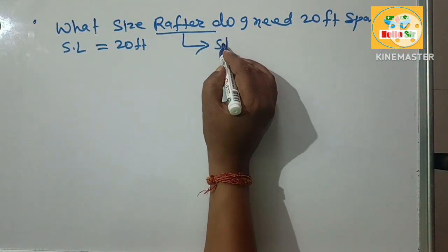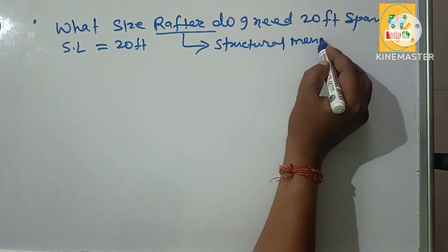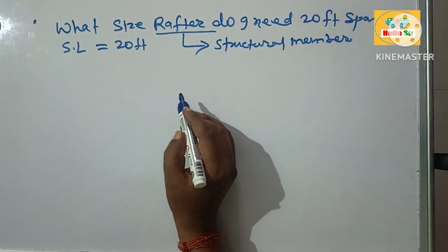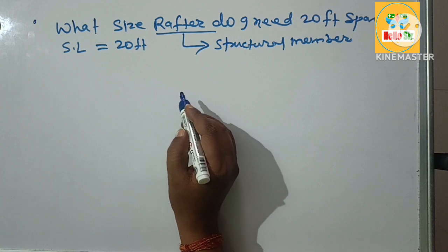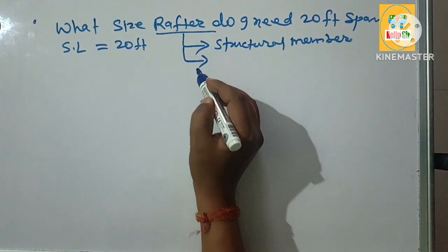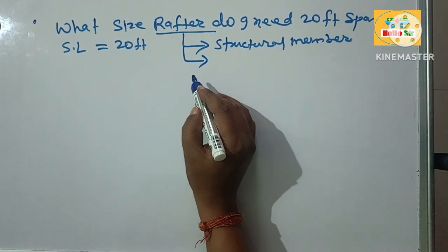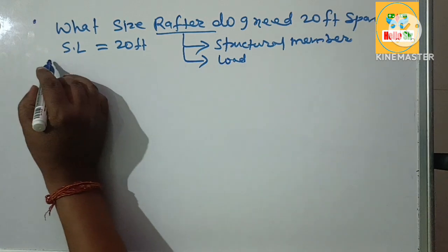As you know, rafter is a structural member in roof structure and it can expand half the width of the building. It is a sloping piece of wood that supports the load of roof structure.